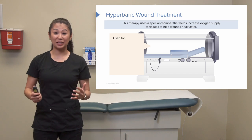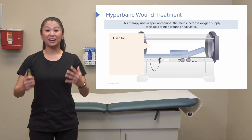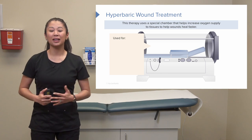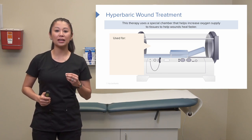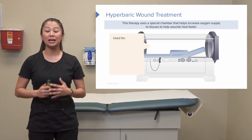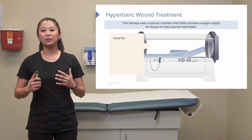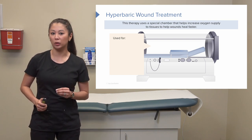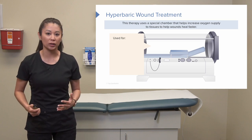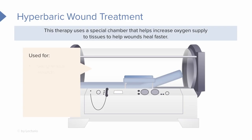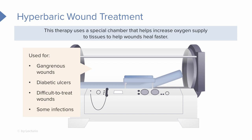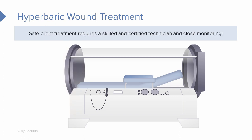Now let's look at this piece of equipment — it looks cumbersome, like a teleportation device, but it's actually a special chamber used to increase oxygen to tissues to help wounds heal faster. This is for very complex wounds, not everyday wound treatment. It's used for severe gangrenous wounds, diabetic ulcers, difficult-to-treat wounds, and some infections. There are many caveats to hyperbaric wound treatment — the patient must be appropriately screened, a plan of care established, and the patient monitored closely by a physician and team.